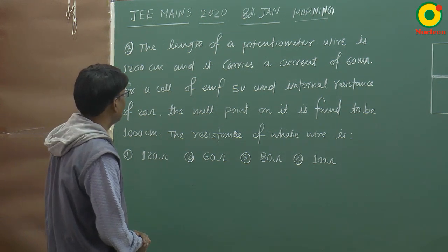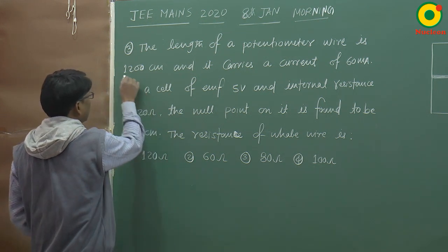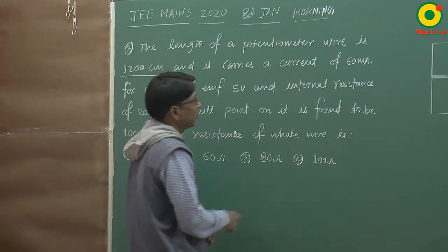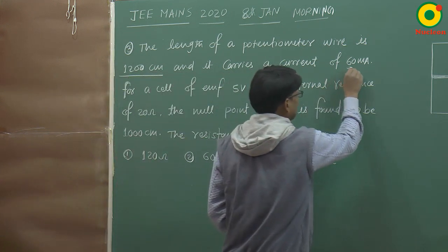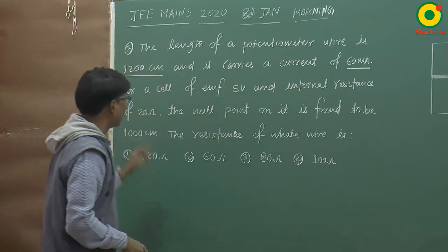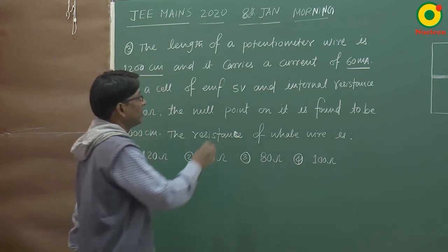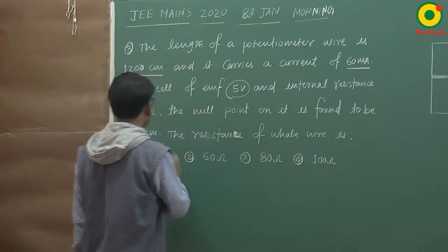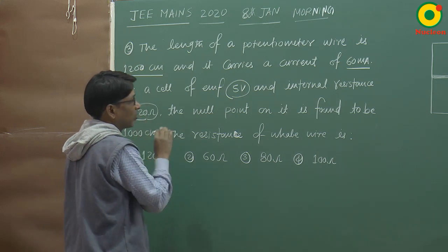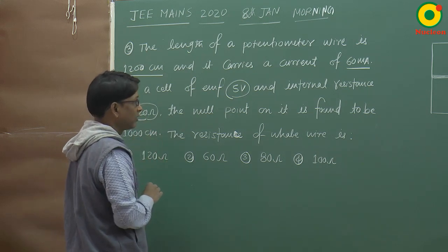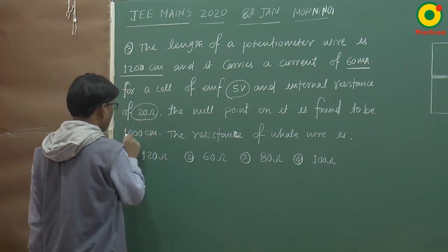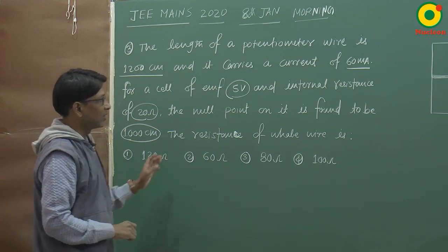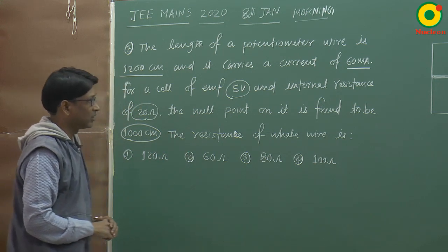Potentiometer wire is 1200 cm and it carries a current of 60 mA. A cell of EMF 5 volt and internal resistance 20 ohm is used. The null point on it is found to be 1000 cm. Find the resistance of the whole wire.